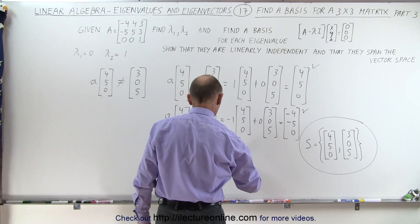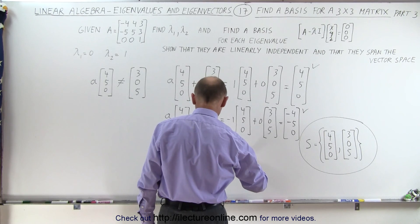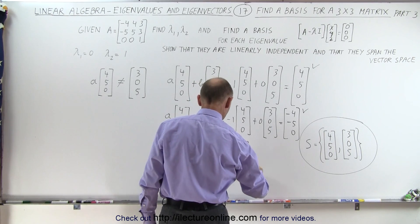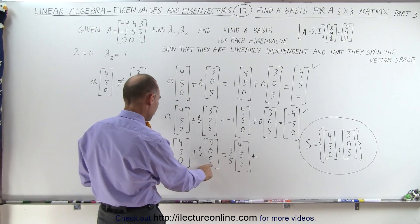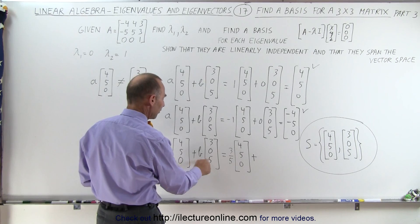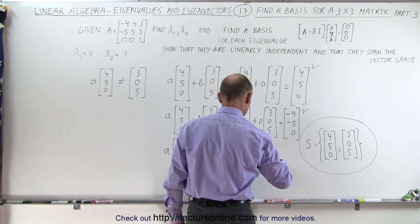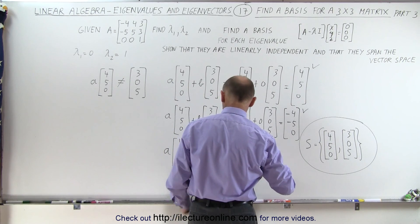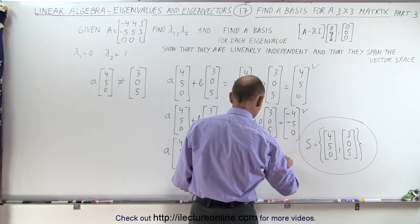So let me try that. 3/5 multiplied times [4, 5, 0] plus... let's see here, I want 5 to become 1. So if this is 1/5, 1/5 times 5 gives me 1 because I have a 0 here. So I'm going to try 1/5 over here times [3, 0, 5]. Let's see if that adds up.